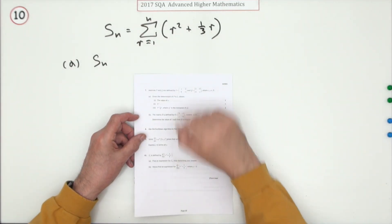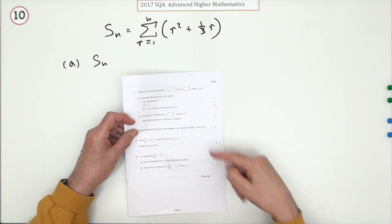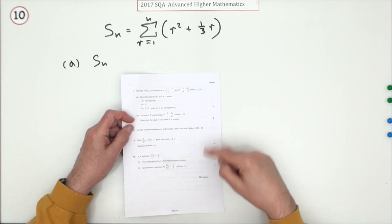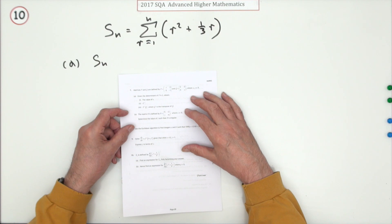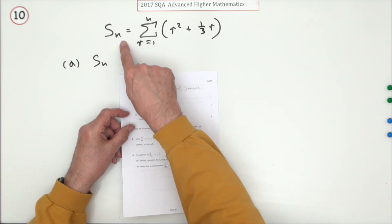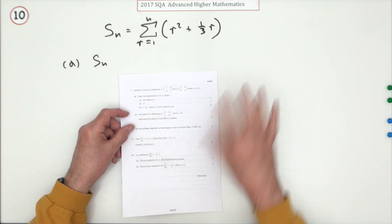Number 10 from the 2017 Advanced Higher Maths. Just four marks this time, broken down into two marks and two marks. Here we go. We've got a summation formula to simplify. Find an expression for this, fully factorizing your answer.